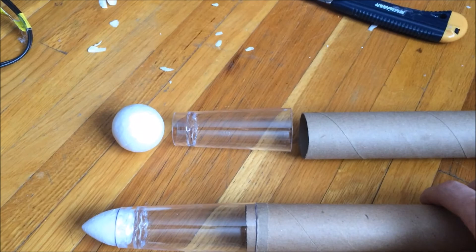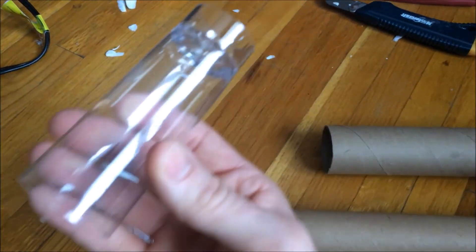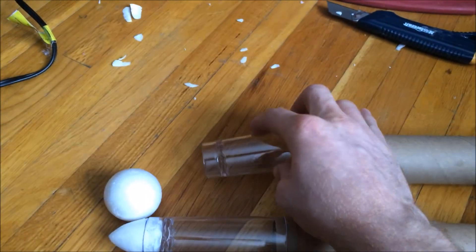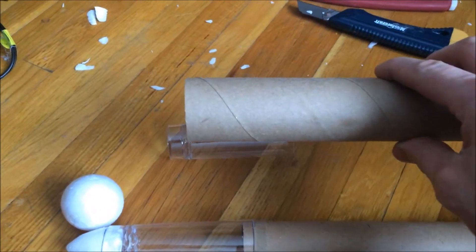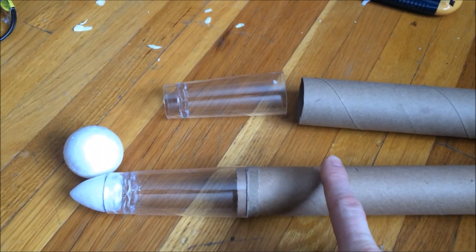What it consists of is a foam ball from the dollar store, a cheap plastic shot glass from the dollar store, and this is a paper towel tube and this one is a wrapping paper tube.